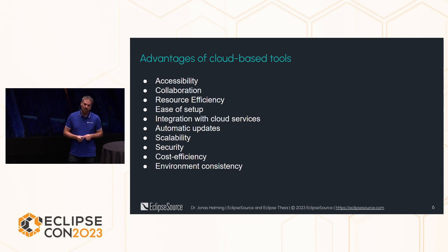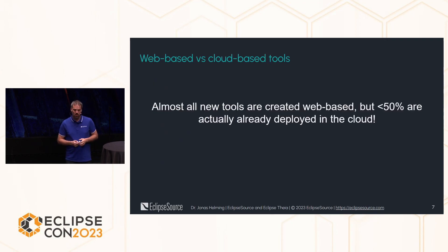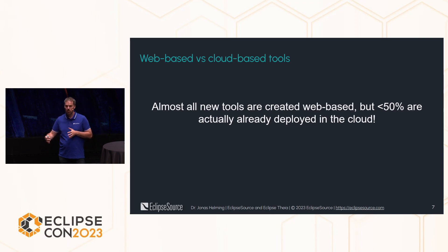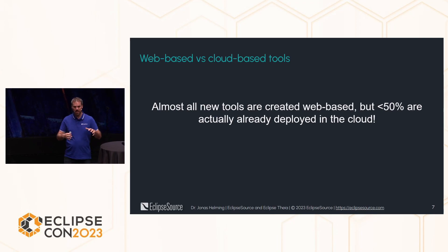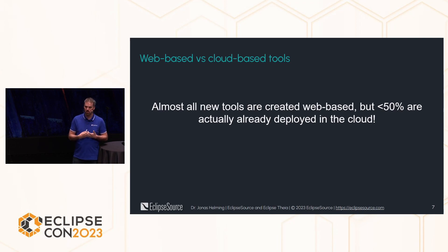Maybe more interesting: why did I put this on place three, and why does it say 'cloud ready' and not 'cloud based' or 'cloud deployed'? The interesting observation in my work context is that almost all new tools are created on a web-based technology stack, but less than 50% are actually already deployed in the cloud. With technologies like Theia, you can build a tool on a web-based stack with client-server architecture, but still deploy it as a desktop application using, for example, Electron.